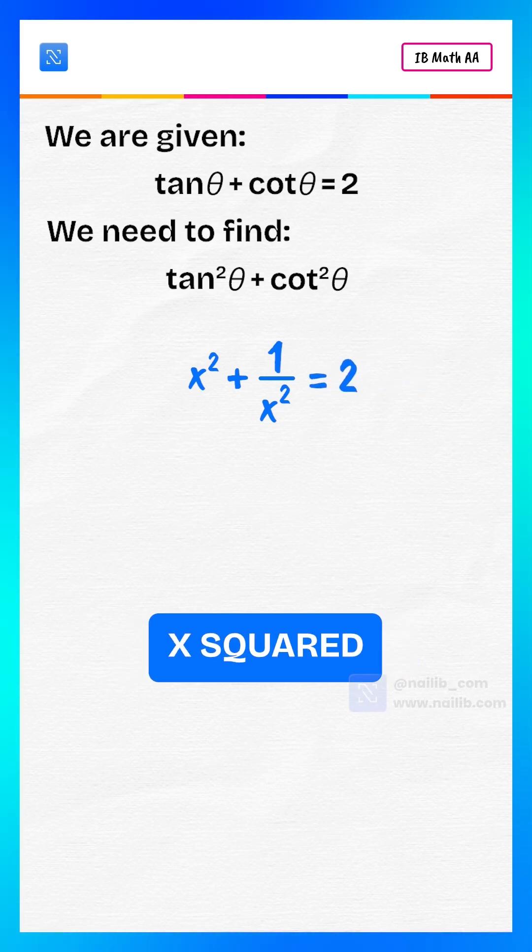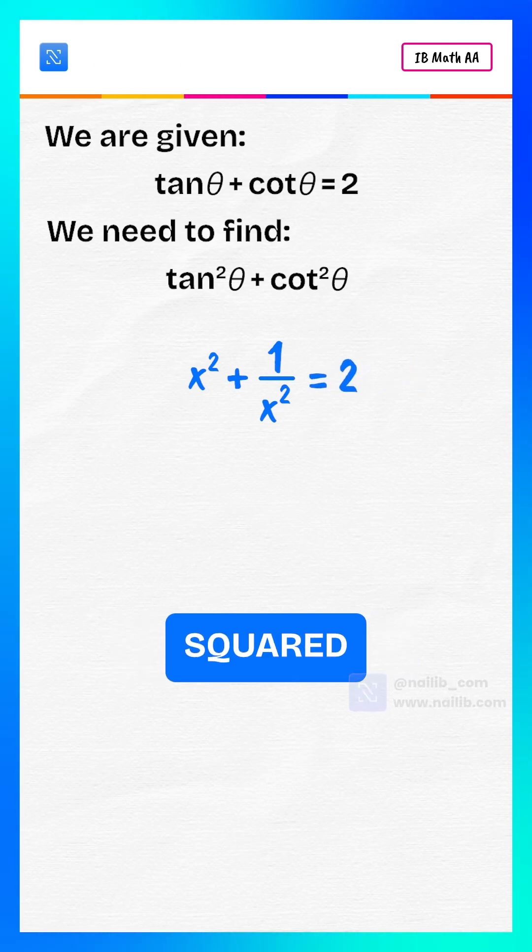Subtract 2 from both sides: x squared plus 1 by x squared equals 2.